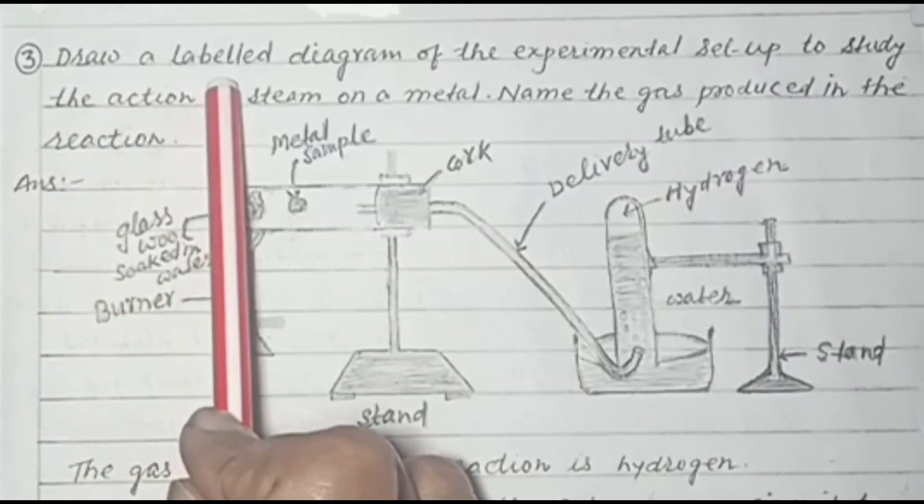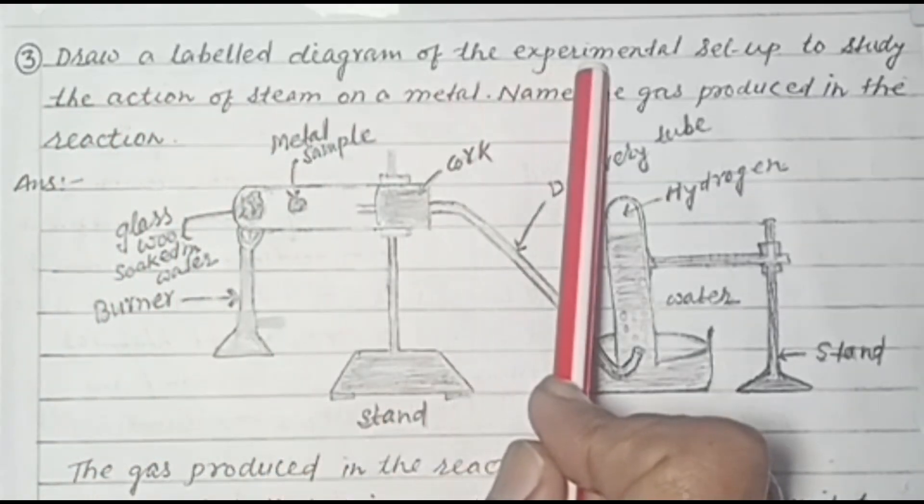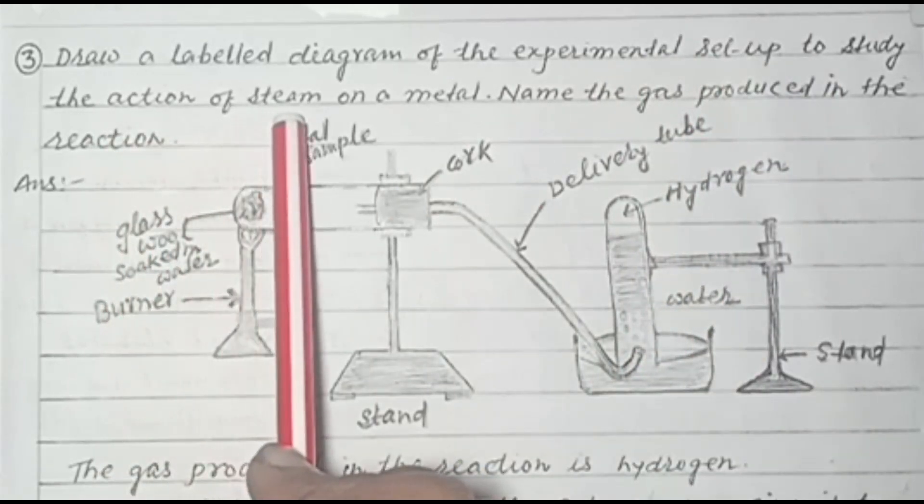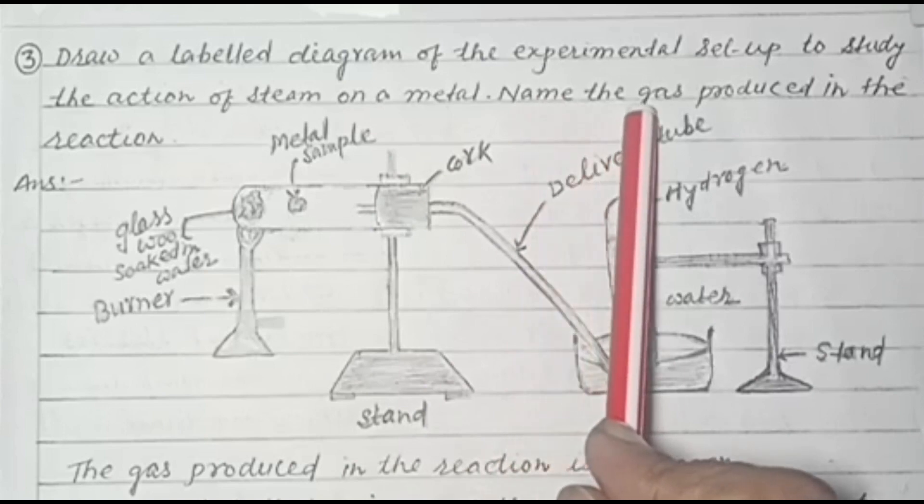Draw a labelled diagram of the experimental setup to study the action of steam on a metal. Name the gas produced in the reaction.